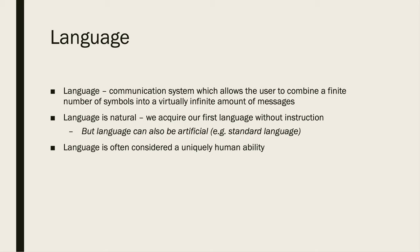Language is something that we use every day — we've used it since we were infants. But what is language? Language is not the only form of communication; there are many ways of communicating and many species that take part in communication. But language is a special kind of communication system. Language is a communication system which allows the user to combine a finite number of symbols into a virtually infinite combination of messages. Over the next few weeks, we'll look in more detail at what those individual terms mean — what do we mean by symbols, and how do they combine to provide a virtually infinite combination of ways of communicating?